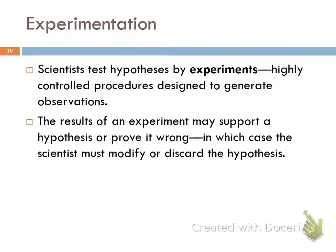The results of your experiment may support your hypothesis, or it may prove it wrong. If your hypothesis is proved wrong by experiment, that does not mean you're a failure — that's just more information. Then you either need to modify the hypothesis or throw it out entirely and come up with a new one. This is the process that scientists use to gain knowledge about matter, and it also works for problem solving in everyday life.